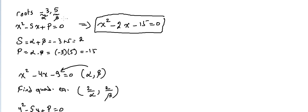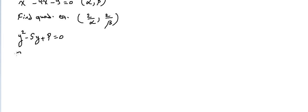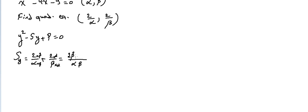To form this equation I need to find the sum of the new roots. The sum for y is two over alpha plus two over beta. Using alpha beta as a common denominator, we multiply: two beta plus two alpha over alpha beta. There is a common factor of two in the numerator.